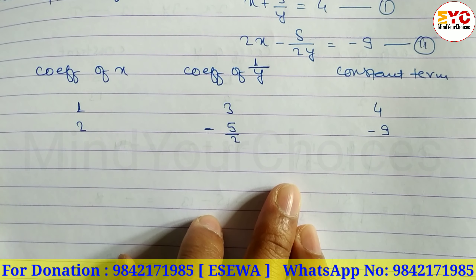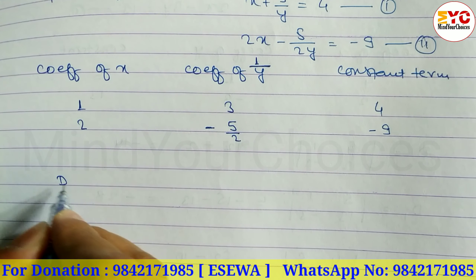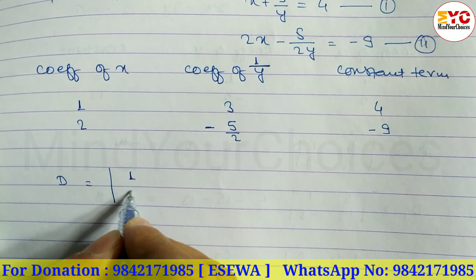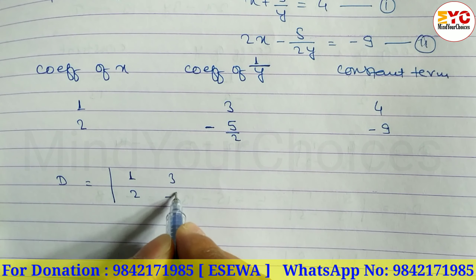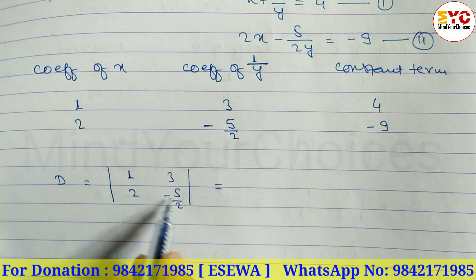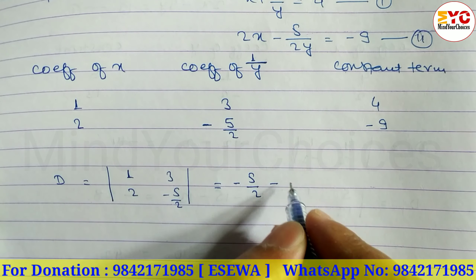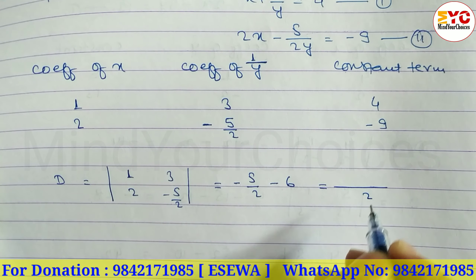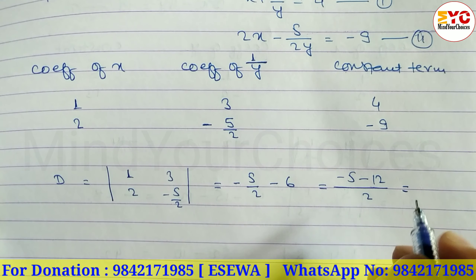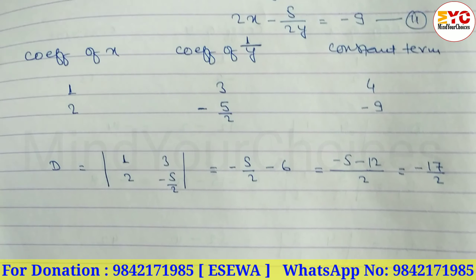Now we find determinants D, D1, and D2. For the main determinant D, using the coefficients of x and y: 1 and 2 (x), 3 and −5/2 (y). Multiply: 1 × (−5/2) − 2 × 3 = −5/2 − 6. Taking LCM gives −17/2.